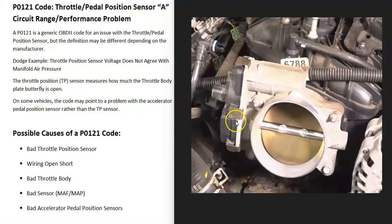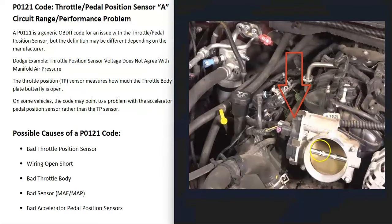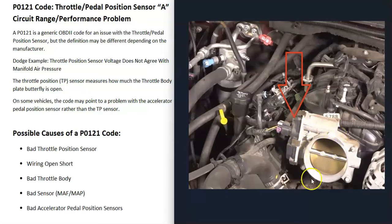So that the computer knows where this plate is at and how it's opening, it uses a throttle position sensor located on the throttle body, mounted somewhere on it with a wiring harness going to it. When you get a P0-121 code, the computer is having an issue with the throttle position sensor being able to read how open the butterfly plate is inside, so it's going to need troubleshooting to know why.